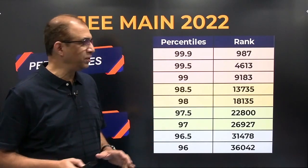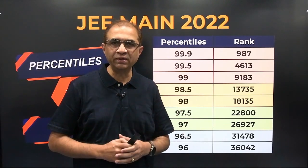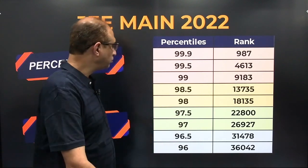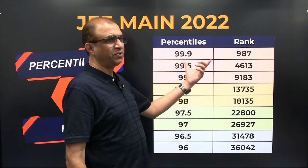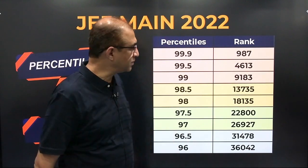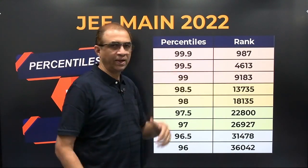Let me warn you that these are all approximations based on data we have collected, but they are reasonably good approximations just to give you an idea. So 99.9 percentile would end at something like around rank 987 — somewhere around 900. It roughly corresponds to what I mentioned: one percentile corresponds to something like around 9000 ranks, so 0.1 percentile would correspond to around 900 odd ranks.